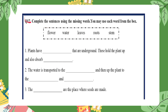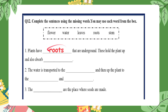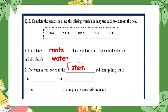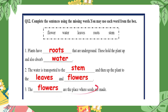In question twelve, complete the sentences using the missing words from the box: flower, water, leaves, roots, stem. Number one: plants have roots that are underground — they hold the plant up and absorb water. Number two: the water is transported to the stem and then up to the leaves and flowers. Number three: the flowers are the place where seeds are made.